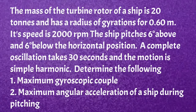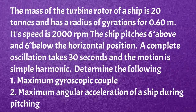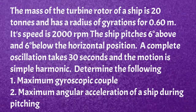The mass of the turbine rotor of a ship is 20 tons and the radius of gyration is 0.60 meter. Its speed is 2000 rpm. The ship pitches 6 degrees above and 6 degrees below the horizontal position. The complete oscillation takes 30 seconds and the motion is simple harmonic. Determine: first, the maximum gyroscopic couple; second, the maximum angular acceleration of the ship during pitching.